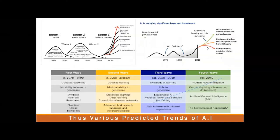Looking at the trends of AI, technology goes through cycles — there'll be a boom, then nothing, then boom again. In the 1960s there was a boom, then a winter. Then in the 1980s–90s there was a boom, again a complete downturn around 2010. Now there is hopefully a boom, and then they say there'll be another winter and then a fourth wave. The first wave was good at reasoning, the second wave was good at learning, the third wave became excellent at learning, and the fourth wave will be human-level intelligence.